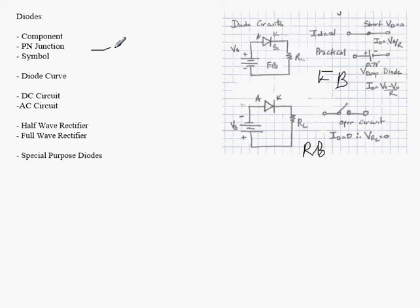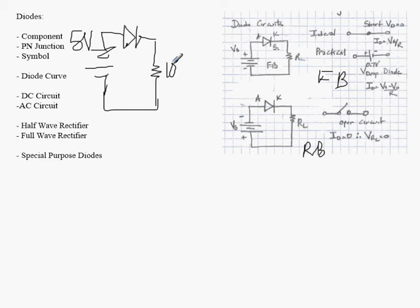So let's do an example of this. Let's assume that you have a battery, 5 volts connected to the diode, and this is a 100-ohm resistor.